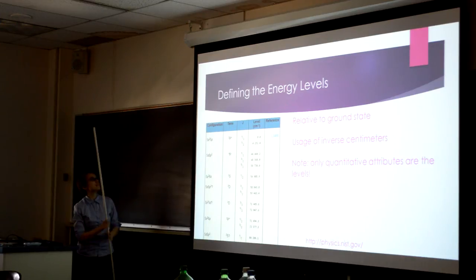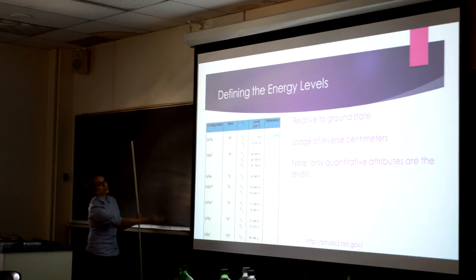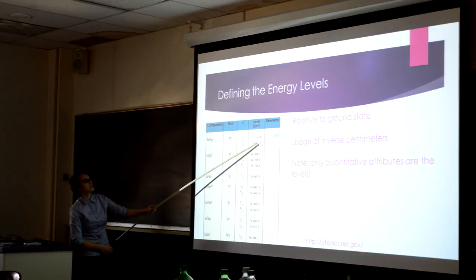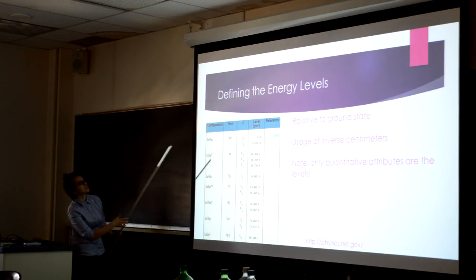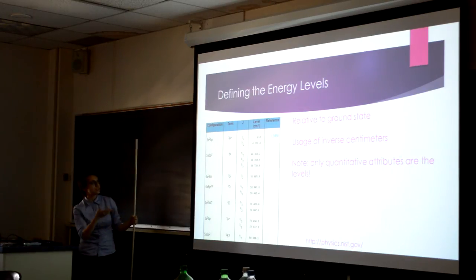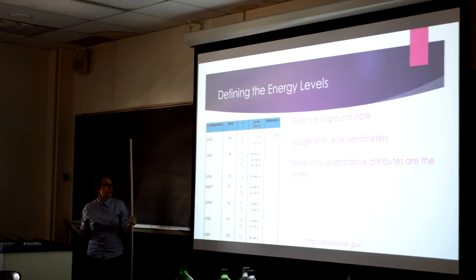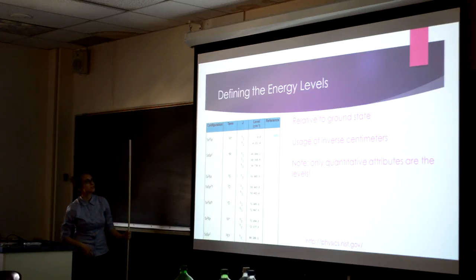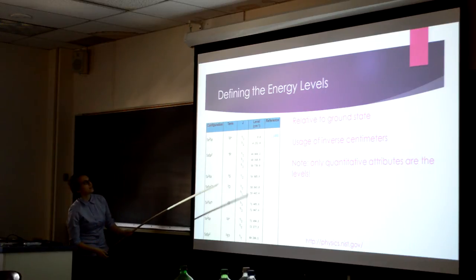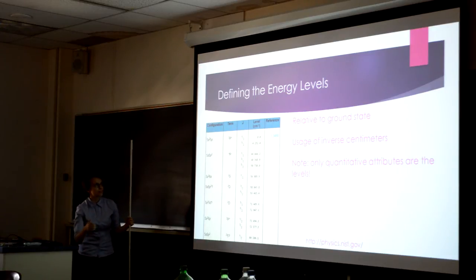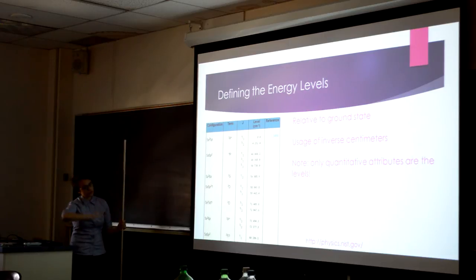The first thing I had to do was define these energy levels. This is a plot from the NIST website, so these are all experimental levels. Everything is relative to the ground state, which is defined as zero — it's more convenient to define things relatively rather than finding absolute energies. Also, the levels are defined in inverse centimeters rather than energy units, because if you take the inverse of these levels you get the wavelength of what would be emitted if the atom transitioned to the ground state, which is very convenient.